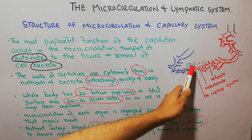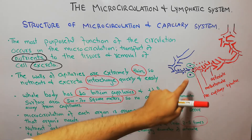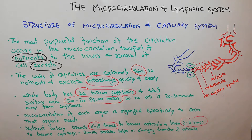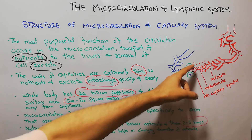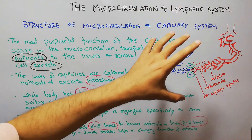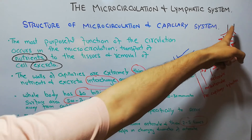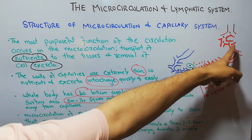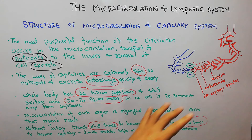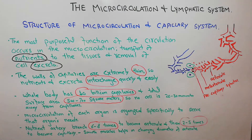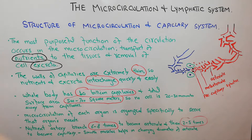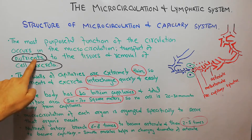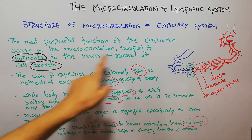These green-colored cells shown on two sides of the capillaries utilize the nutrients and produce the excreta. The blood starts coming from the heart into the aorta, into the arteries, and into the arterioles, then it reaches the capillaries. It is at the level of capillaries that the most purposeful function of circulation occurs — transport of nutrients to these cells and removal of the excreta.